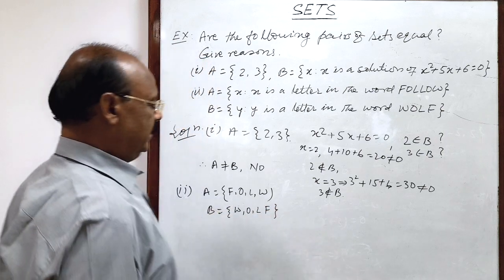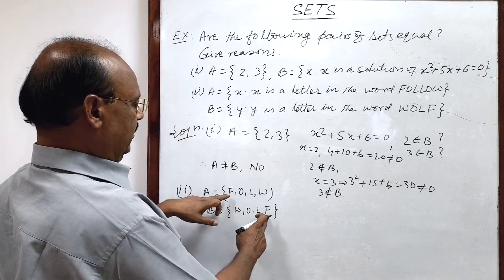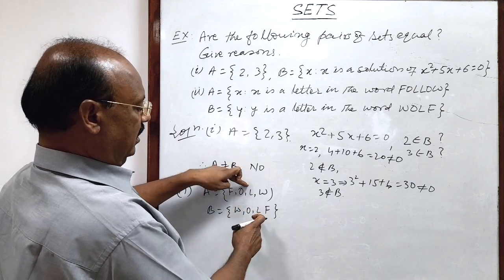Set B has members w, o, l, f. You see both sets have the same elements: f is in both sets, o in both sets, l in both sets.